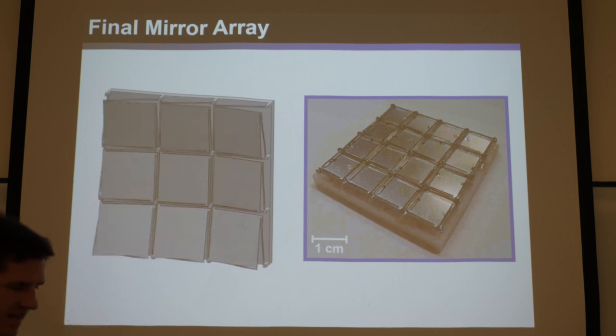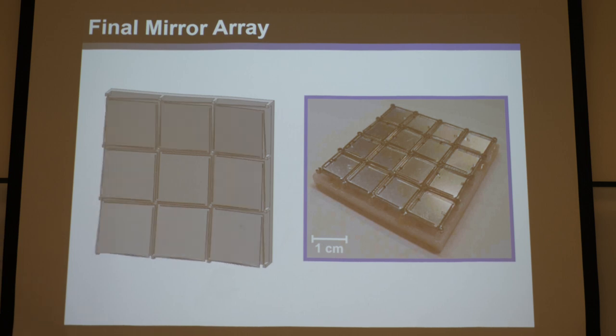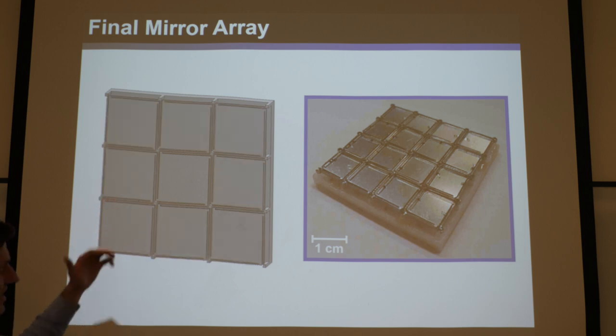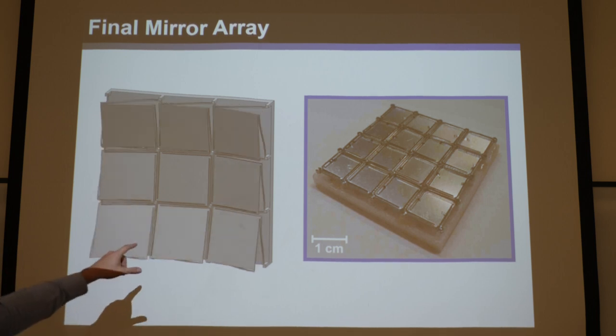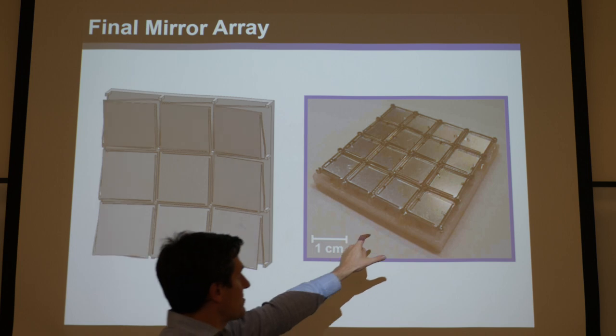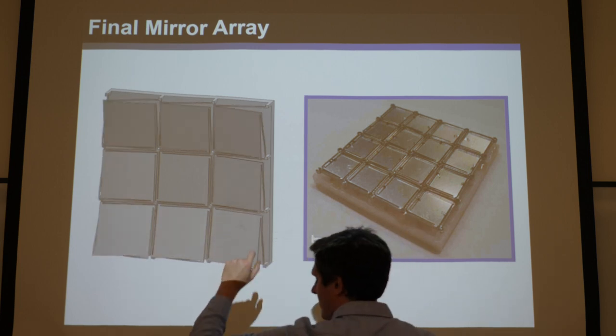24 to 30 frames a second. And so as long as these mirrors can tip and tilt and reconfigure faster than that, then you can shine it in both eyes. Now with mirrors that are small enough, these are centimeter sized mirrors, but if you can make these millimeter sized mirrors, which is easy in a clean room, then these things can move like 40 kilohertz. And so that's 40,000 times a second.